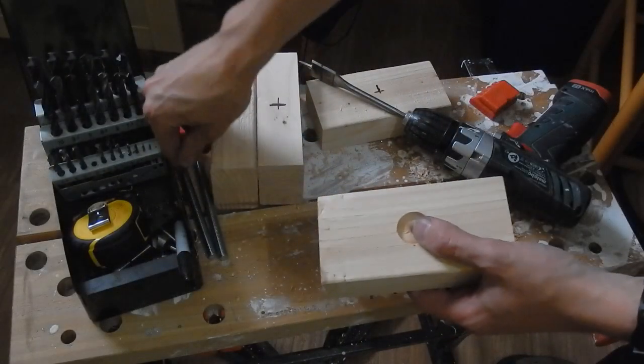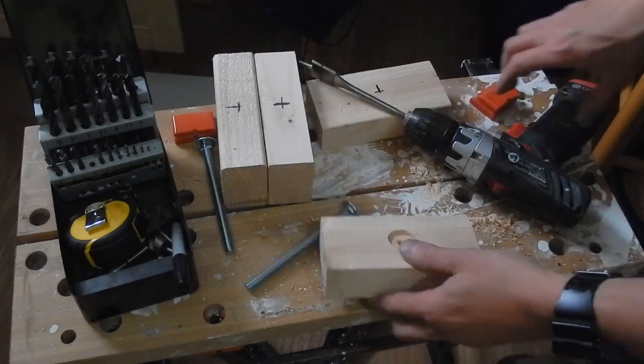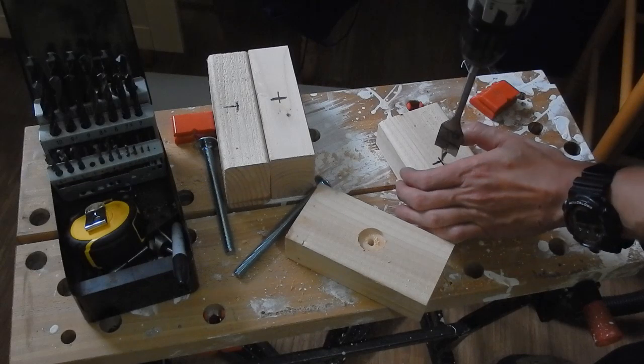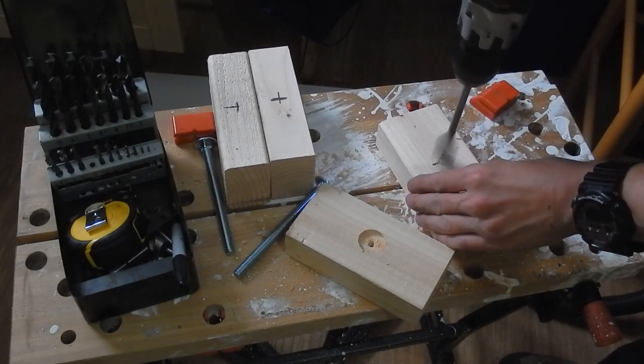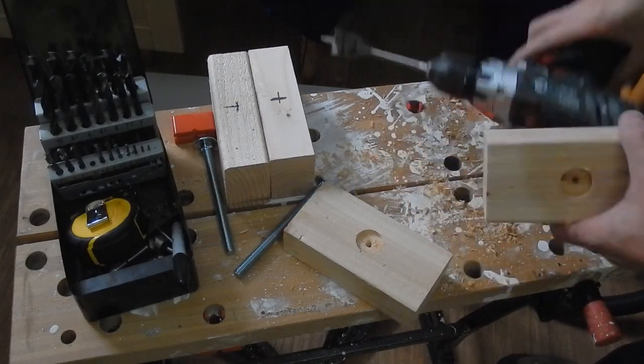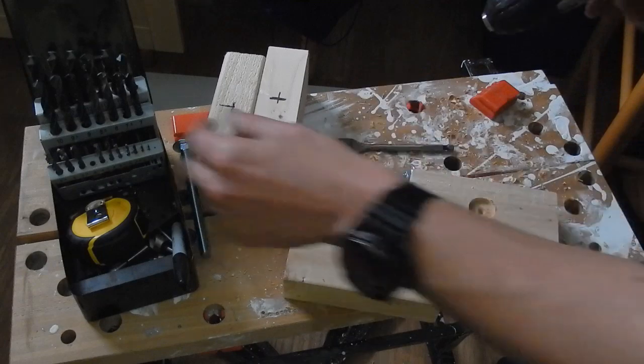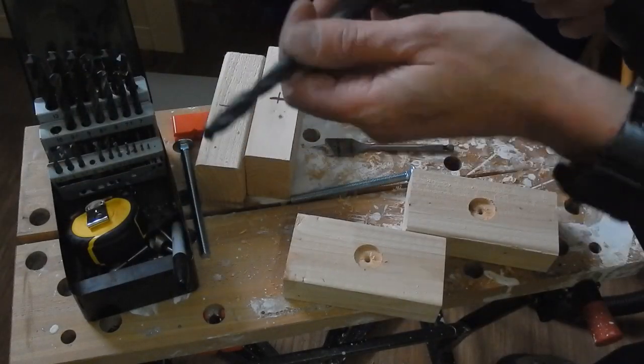To make these blocks then, starting off with a counter-bore hole, I'll accept this coach bolt head. Then I can extend that hole, taking it right through the timber.